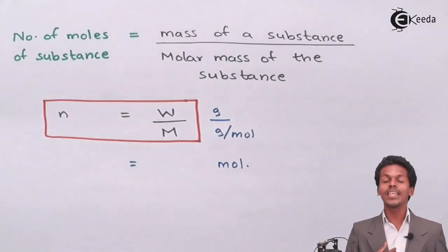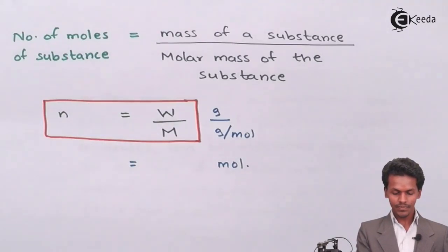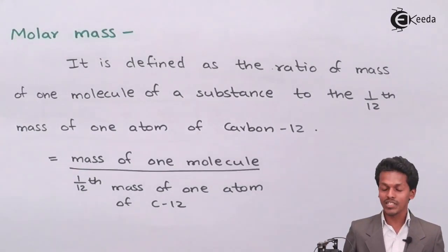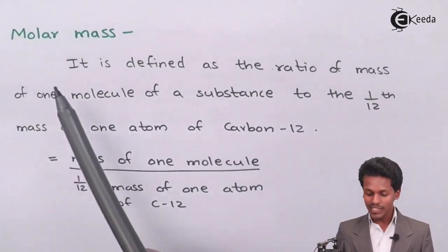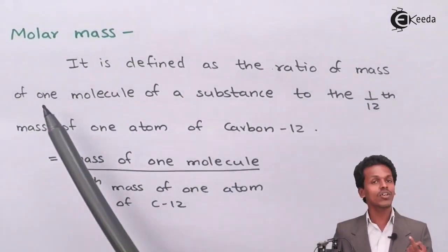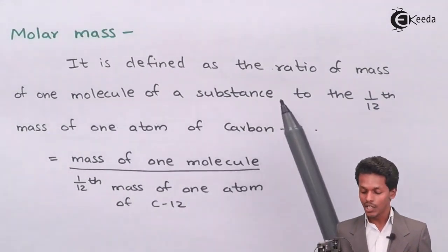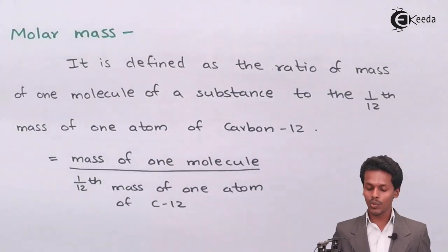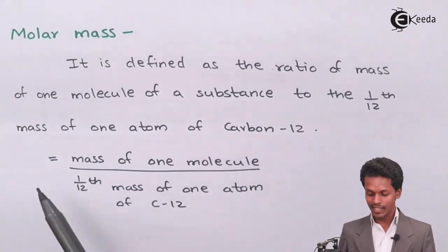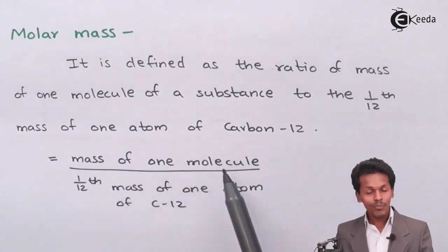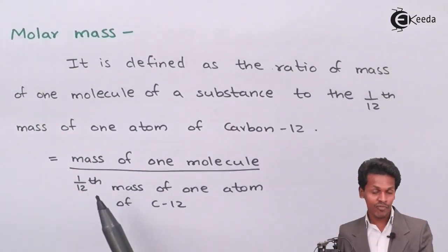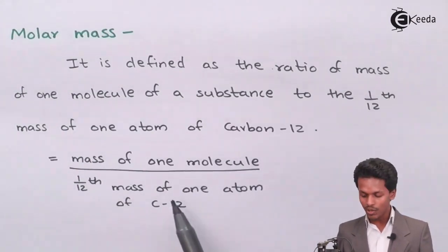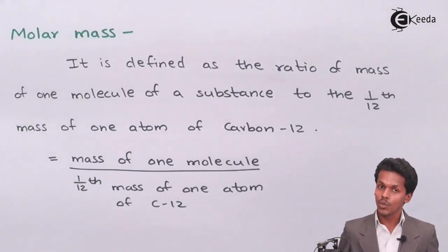Now talking about molar mass: molar mass is defined as the ratio of the mass of one molecule of a substance to one-twelfth the mass of one atom of carbon-12. We can write it as the mass of one molecule of a substance or element or compound, divided by one-twelfth the mass of one atom of carbon-12.